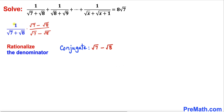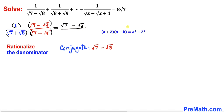Now let's multiply the numerator by this quantity, and likewise multiply these binomials at the denominator as well. At the numerator, multiplying by 1 gives us square root of 7 minus square root of 8. For the denominator, let's recall the identity: a plus b times a minus b equals a squared minus b squared. Applying that here gives us square root of 7 whole square minus square root of 8 whole square.